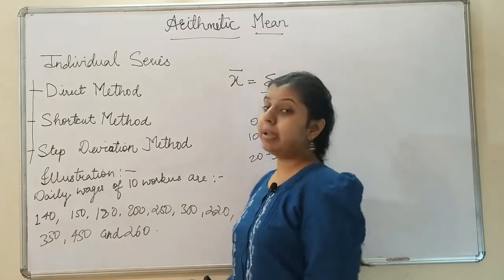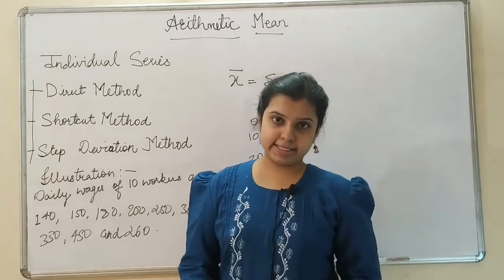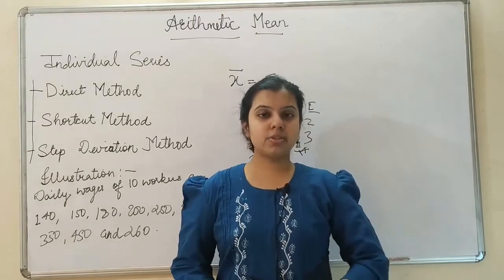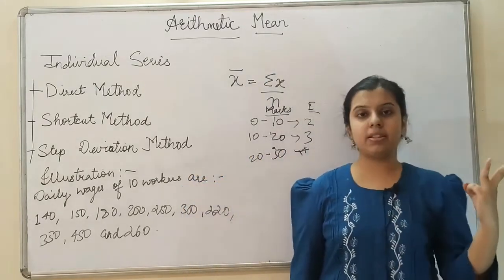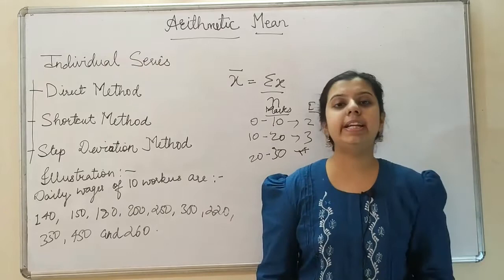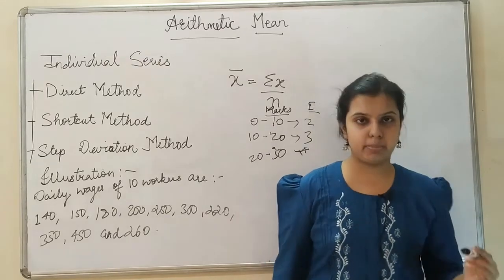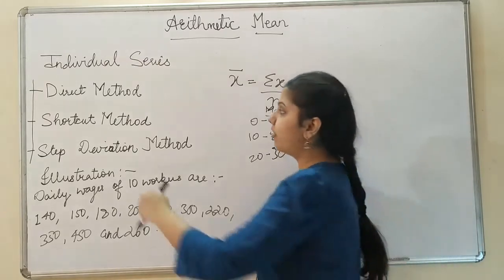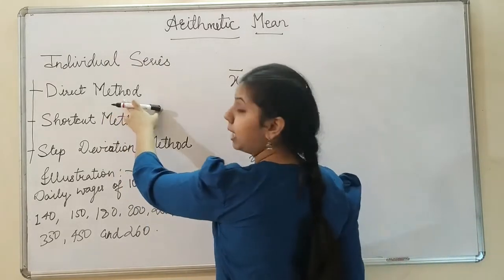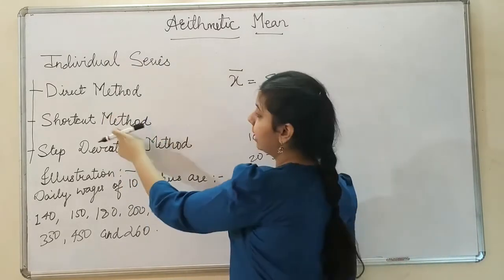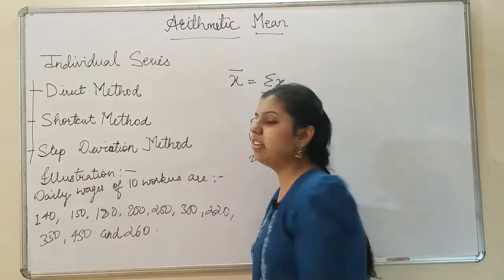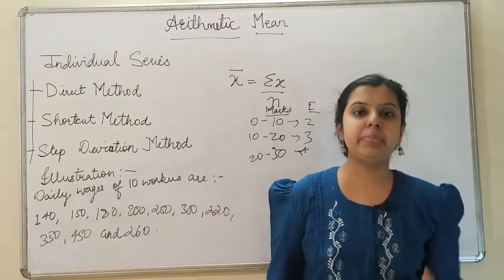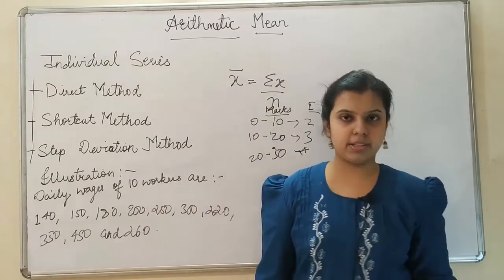In the individual series, there are three methods for calculating the arithmetic mean. The first one is the direct method, then we have the shortcut method, and then we have the step deviation method.